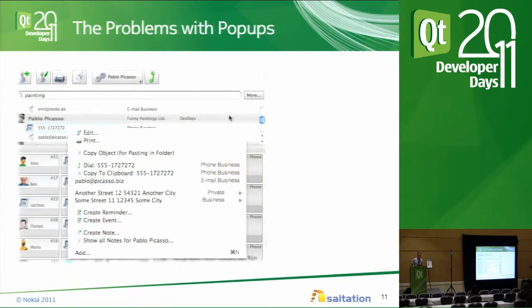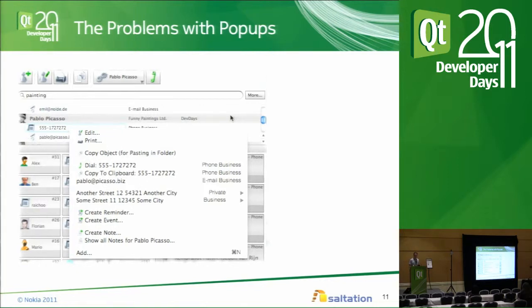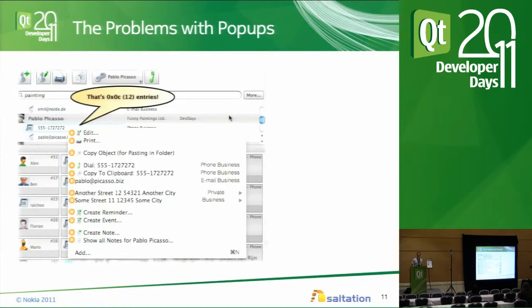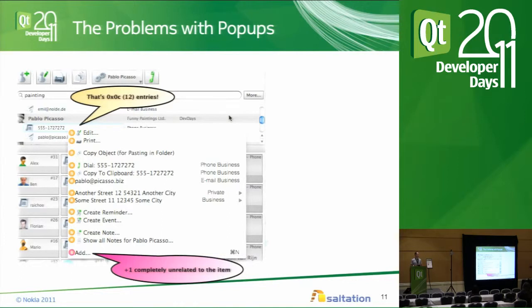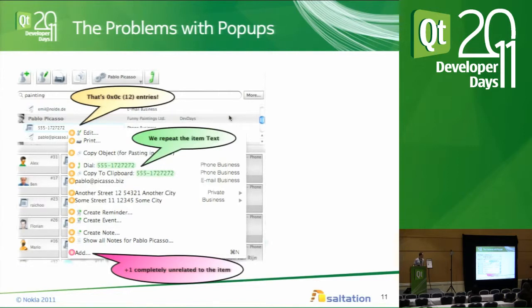The third problem I would like to point out is what I call the popup problem. This is the popup that appears when you right-click on an entry. There are about 12 entries in that popup, and it's quite hard to find the right one. There's one entry in the popup that is completely unrelated to the currently selected item — we just put it in there because we didn't have a better place. To make clear what the actions really mean, we had to repeat the text because people would be totally confused if we only had, for example, 'dial' on the screen — so we repeat the number.